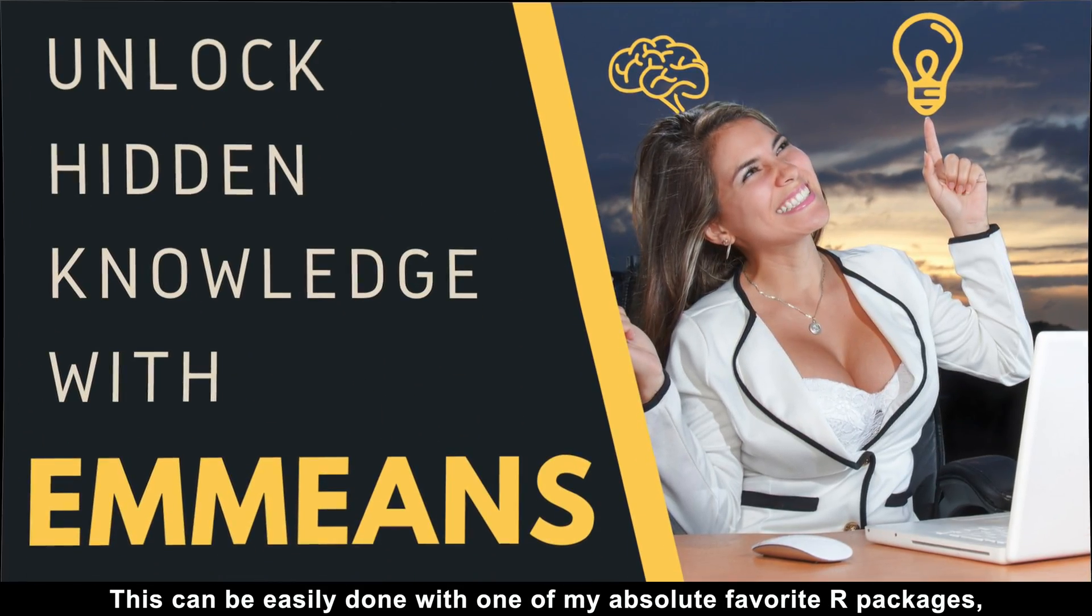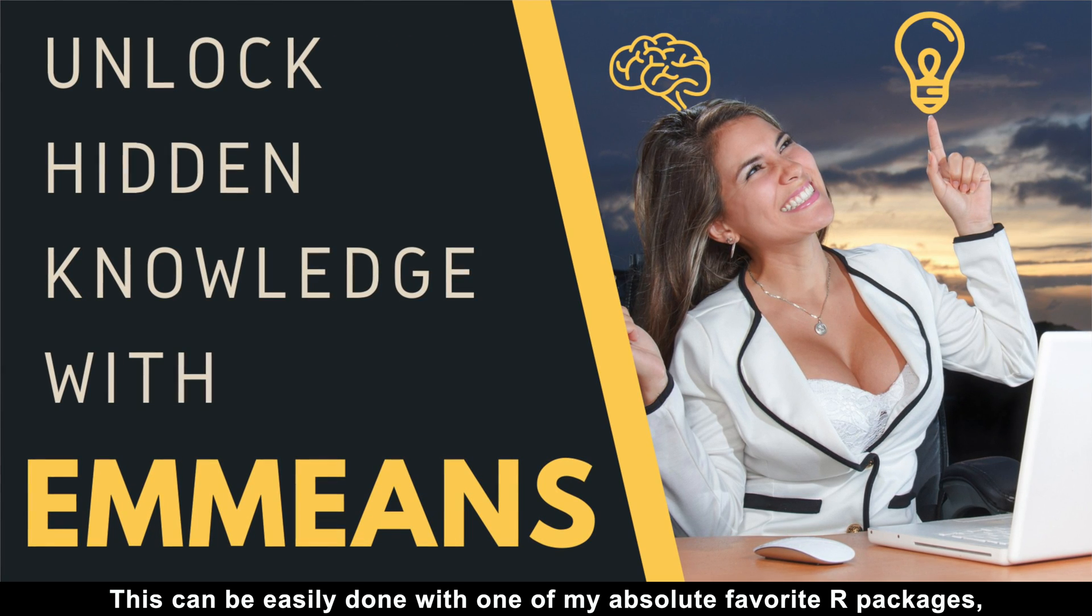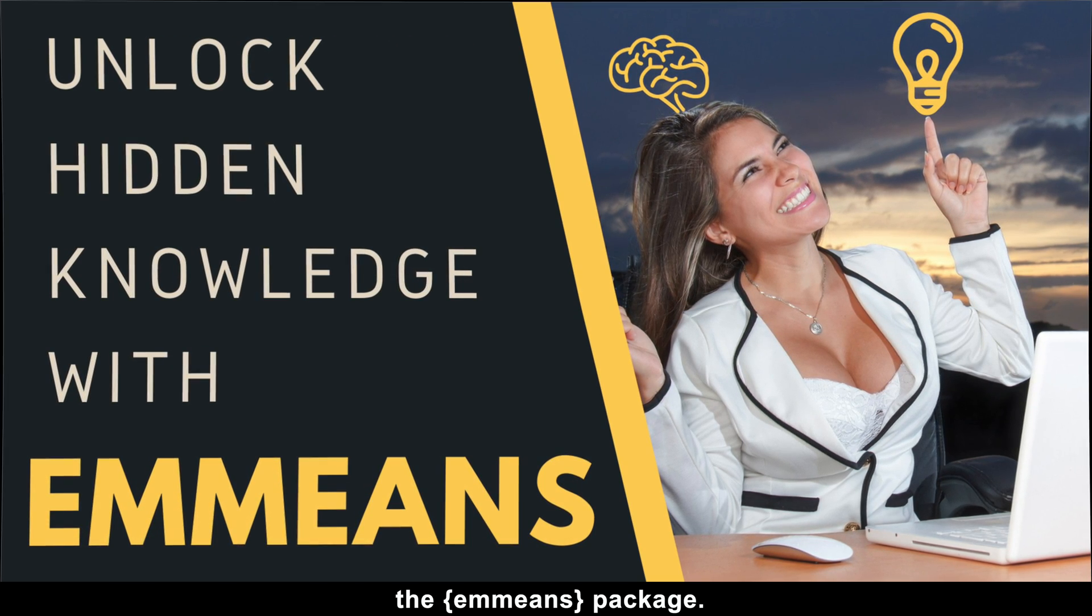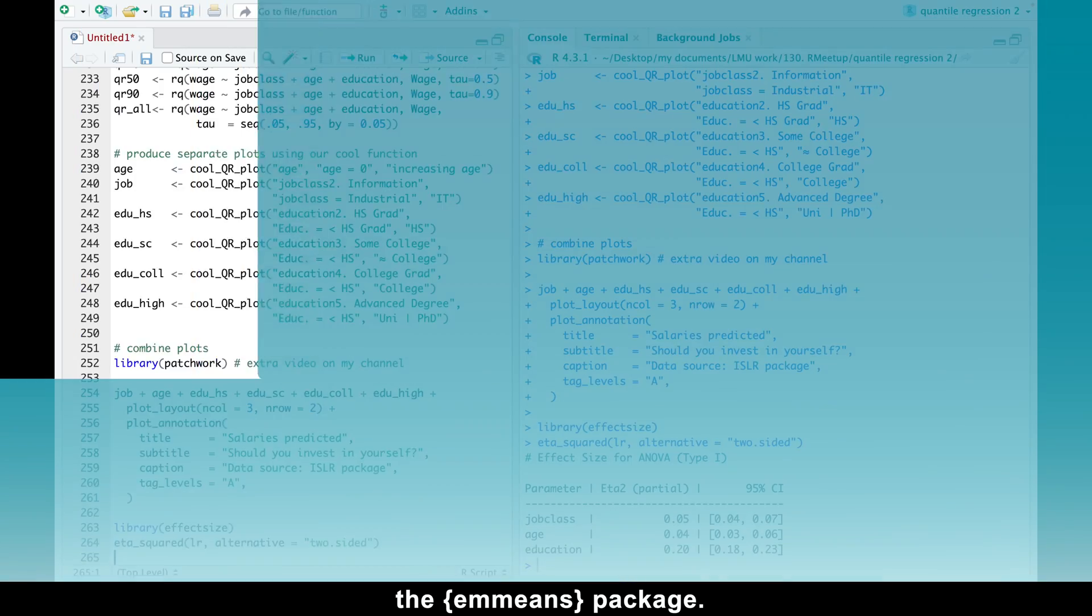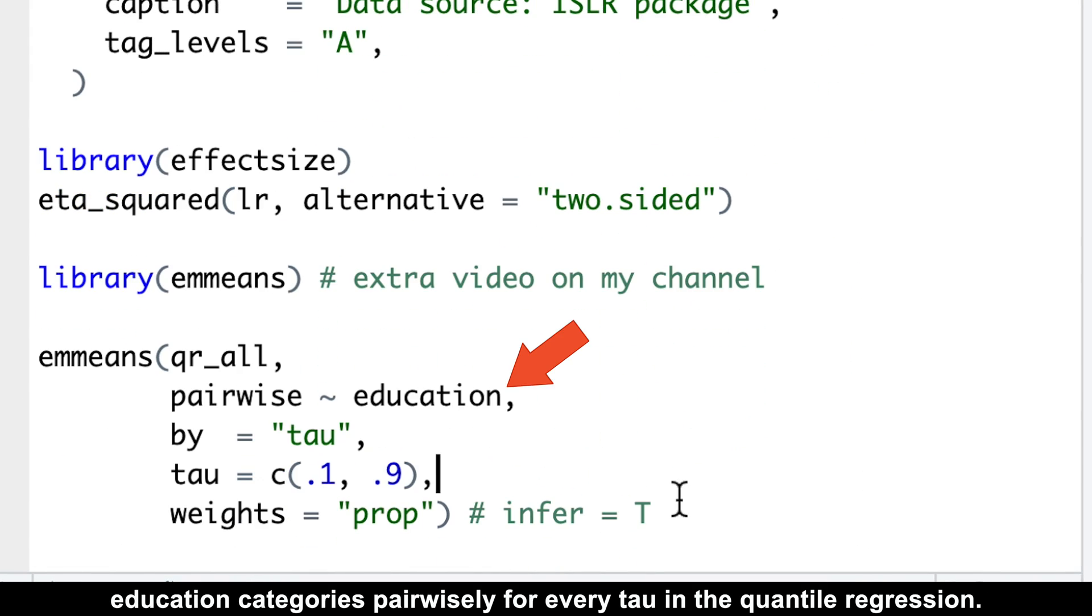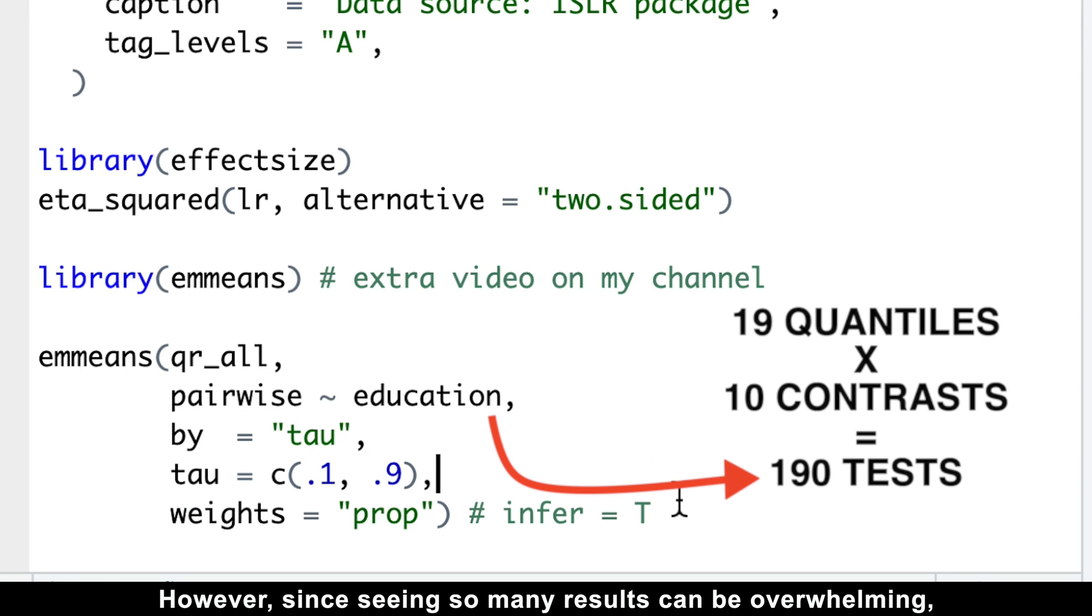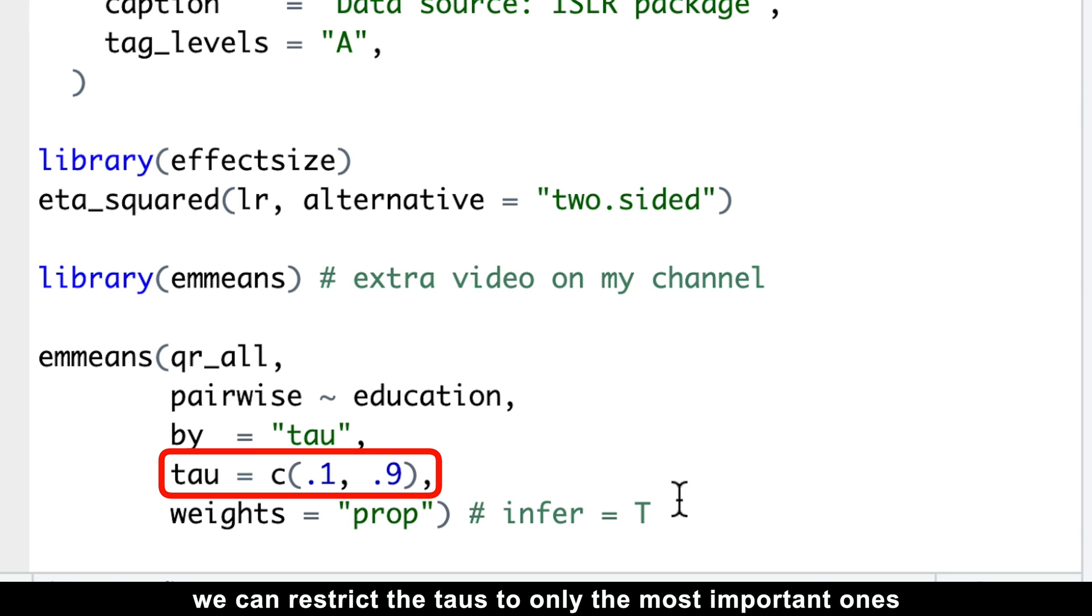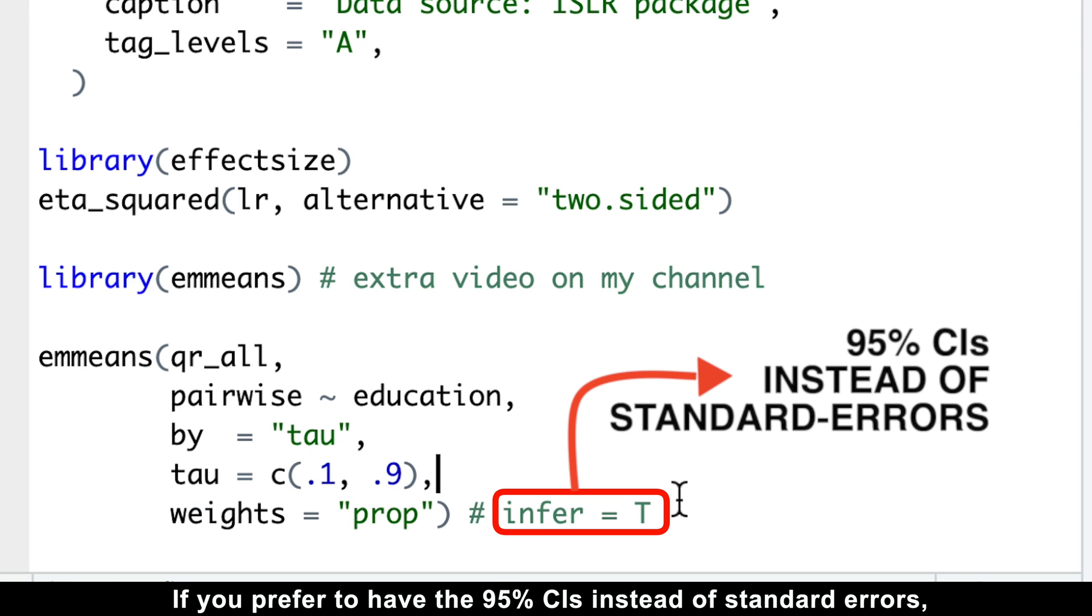This can be easily done with one of my absolute favorite R packages, the emmeans package. What the emmeans package does is that it enables us to compare education categories pairwise for every tau in the quantile regression. However, since seeing so many results can be overwhelming, we can restrict the taus to only the most important ones through the user-friendly tau argument.